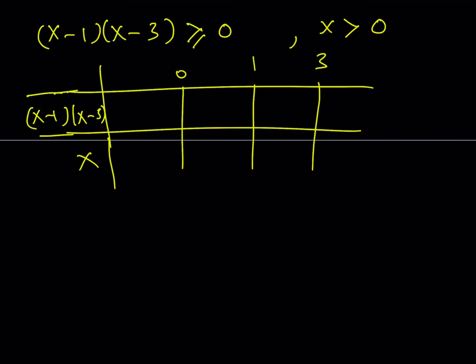And using the method of intervals, I know that 3 to infinity, this is positive, negative, and then positive. If x is positive, this is positive, and otherwise negative.